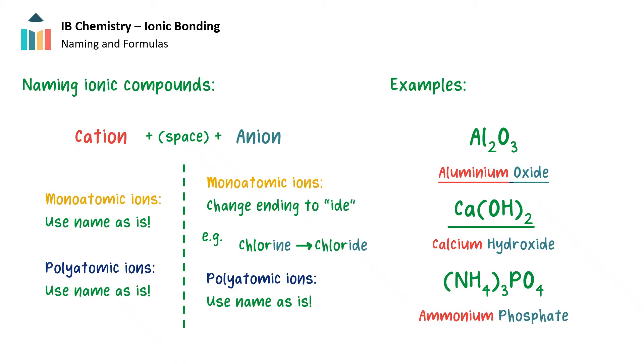Next up we have Ca(OH)2. Here we have calcium as the cation, so we just keep the name as is. Our anion is this time polyatomic, so we also keep that name as is. This makes calcium hydroxide as the correct name.